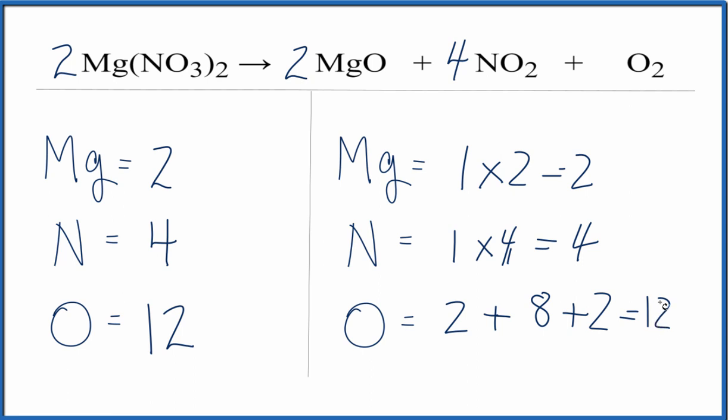We've actually balanced this equation now. It's not the easiest equation to balance and I've relied on some experience and intuition here, but that's one approach. The balanced equation is: Mg(NO₃)₂ yields MgO plus NO₂ plus O₂. This is Dr. B — thanks for watching.